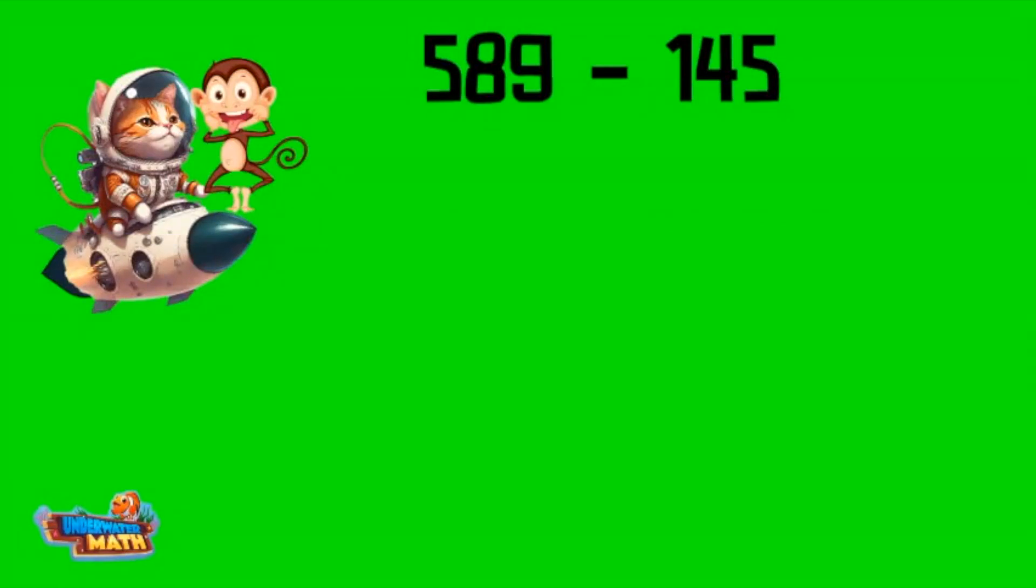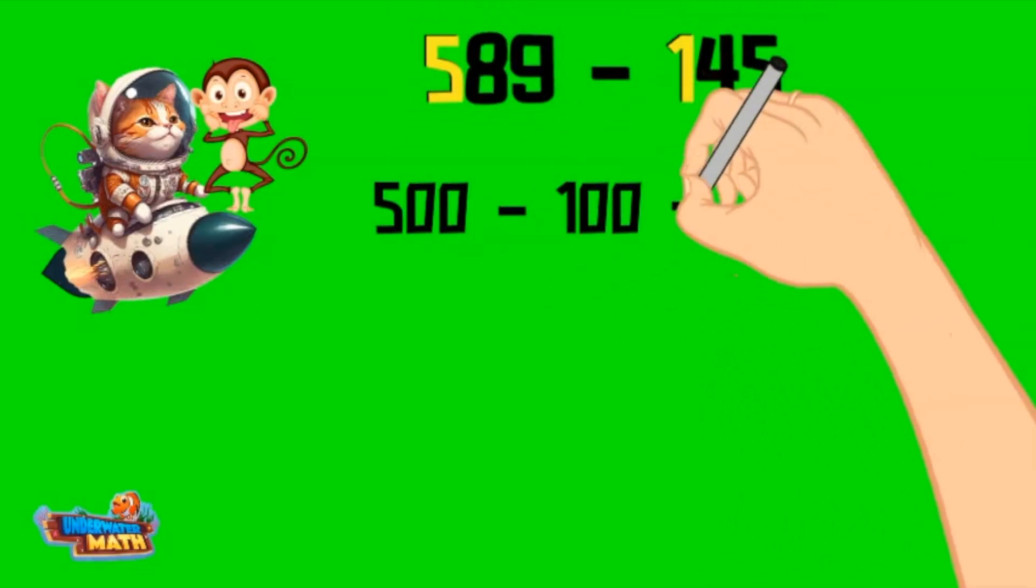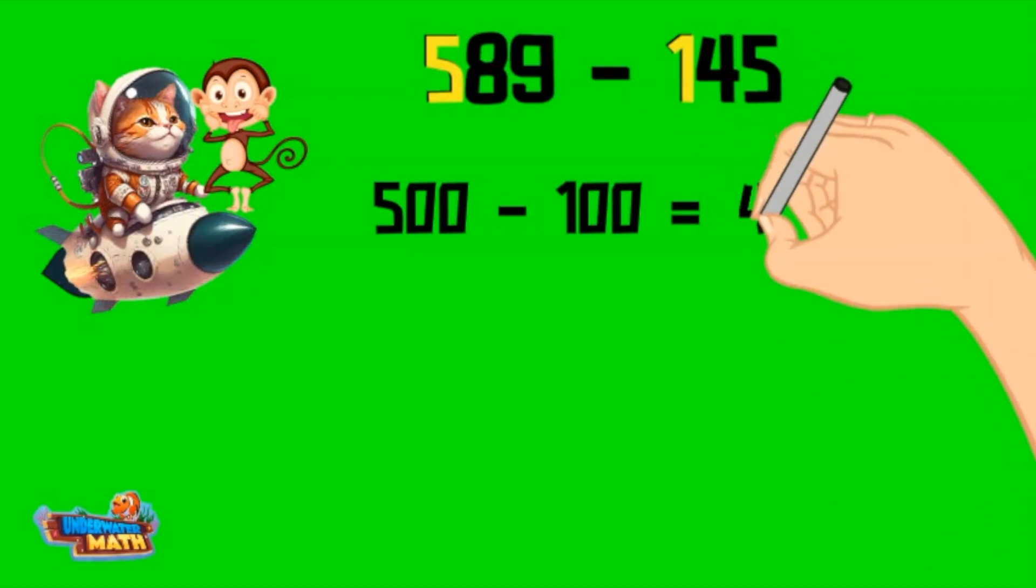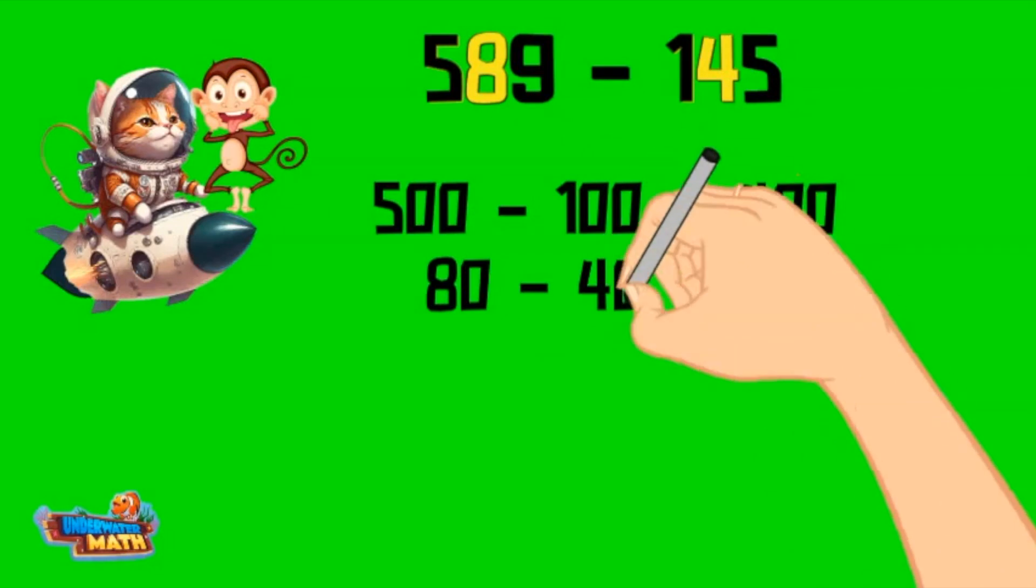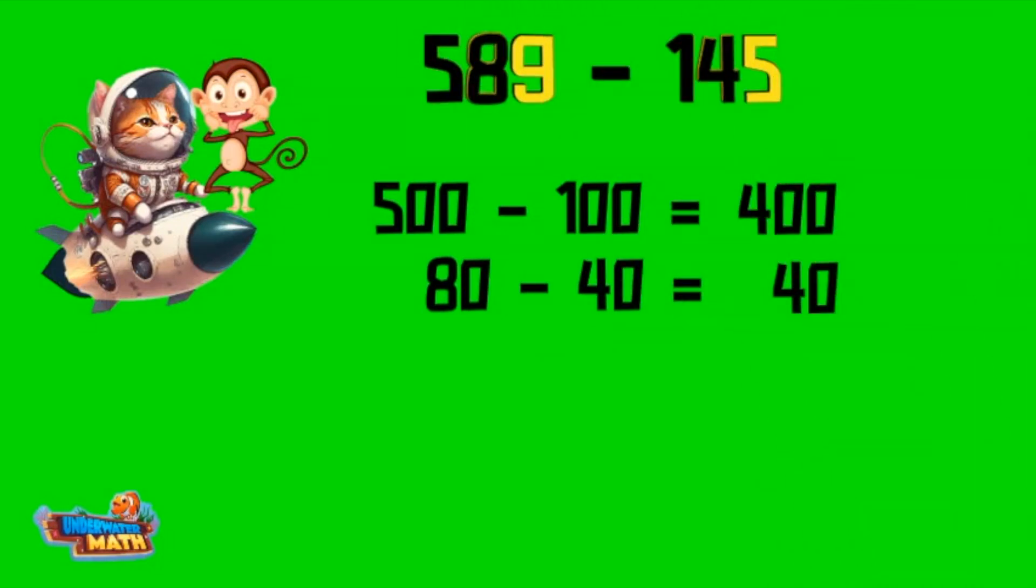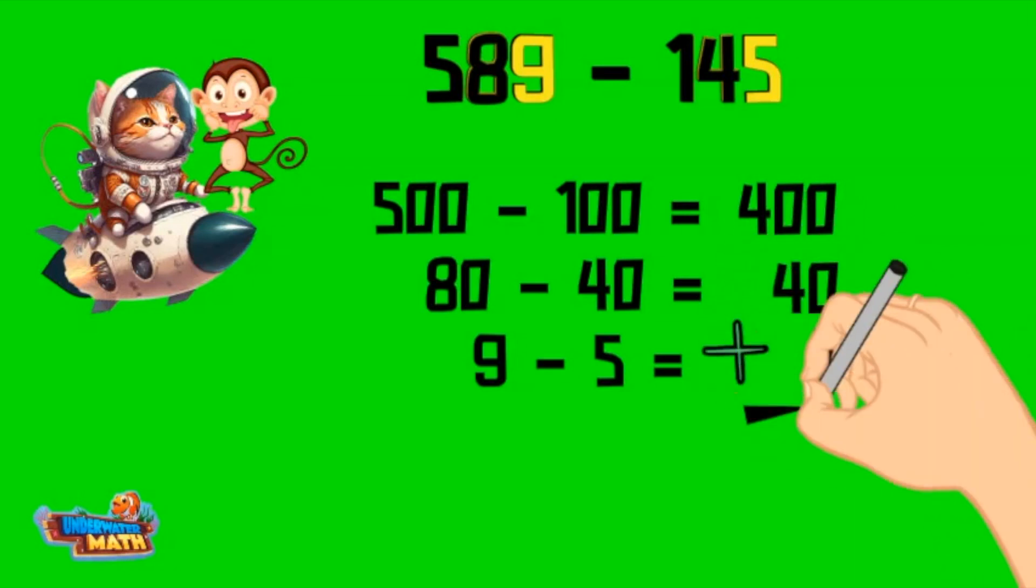It works with subtraction too. 589 minus 145. I start by subtracting the hundreds place: 500 minus 100 equals 400. Then move to the tens: 80 minus 40 equals 40. Then the ones: 9 minus 5 equals 4. I add the differences together for a total difference of 444.